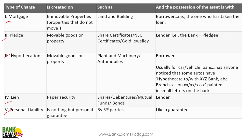Mortgage — a good example is a home loan. A home is an immovable property, for example land and building. When you get a home loan, the borrower is having the possession.